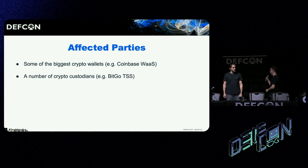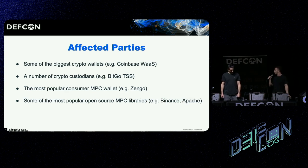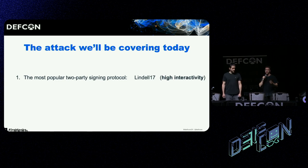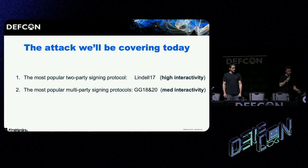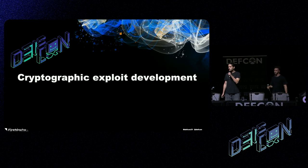The affected parties were numerous — some of the biggest crypto wallets, a number of crypto custodians, the most popular consumer MPC wallet, and some of the most popular open source MPC libraries were affected. The attacks we'll cover: first, the most popular two-party signing protocol, Lindell 17. Then the most popular multi-party signing protocols, the GG18 and GG20 family. And last, we'll attack what we call a do-it-yourself protocol, because it doesn't closely adhere to any academic paper.